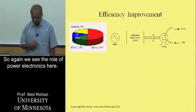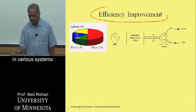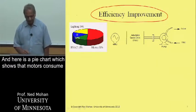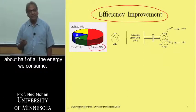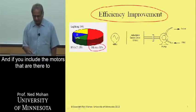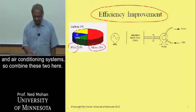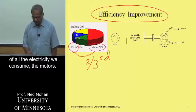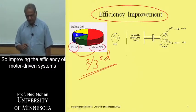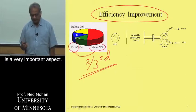Again, we see the role of power electronics. Another application is for efficiency improvement in various systems. Here is a pie chart which shows that motors consume about one half of all the energy we consume. And if you include the motors that drive compressors in heating, ventilating, and air conditioning systems — combining these two — they represent about two-thirds of all the electricity we consume. So improving the efficiency of motor-driven systems is a very important aspect.